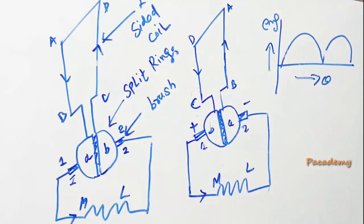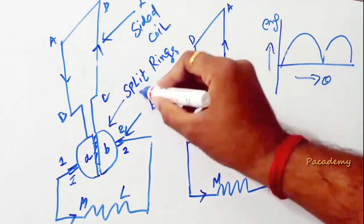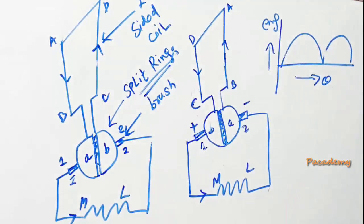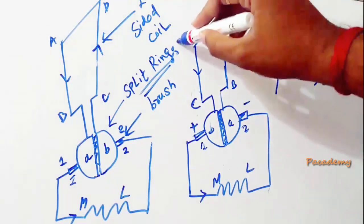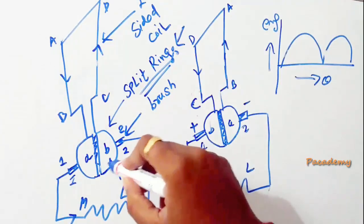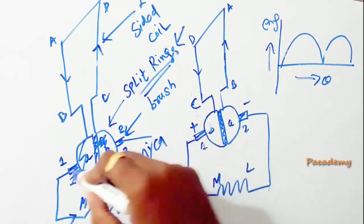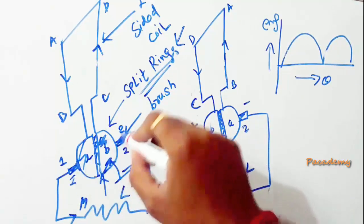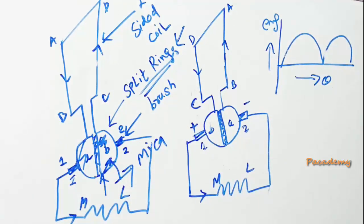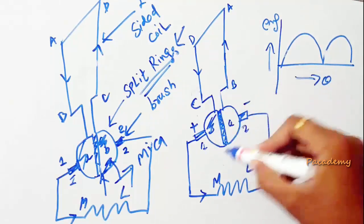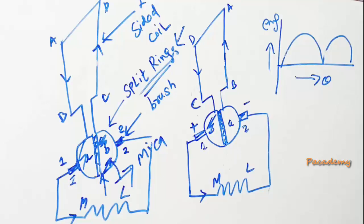To convert the AC induced current to DC in the external load, split rings are used. The split rings are also known as commutator segments and essentially have two segments insulated from each other by a material like mica, with external brushes connected to the segments. The split rings rotate along with the shaft and change their position in contact with the brushes as the coil moves through the magnetic field.